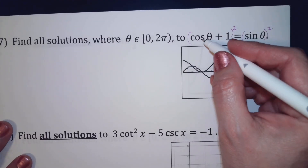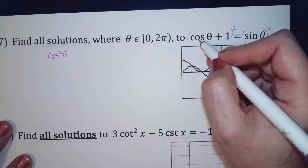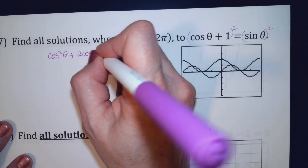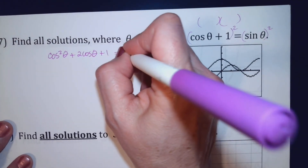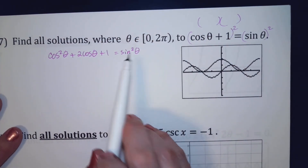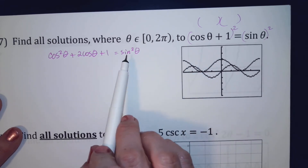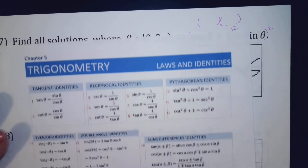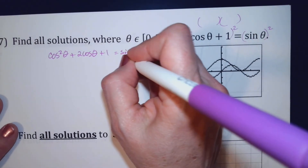Squaring the left side: cosine squared, plus 2 cosine (the middle term from multiplying cosine times 1 times 2), plus 1 squared. On the right side I just get sine squared. From here, I'm going to change sine squared into cosine squared using my Pythagorean identity — sine squared is 1 minus cosine squared — so I replace it with 1 minus cosine squared.